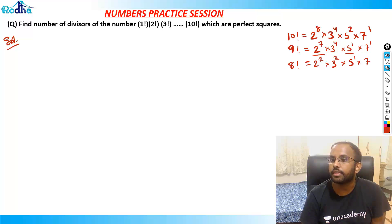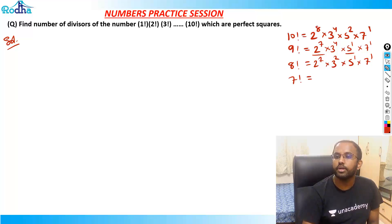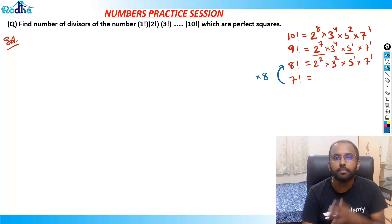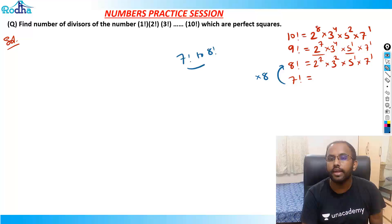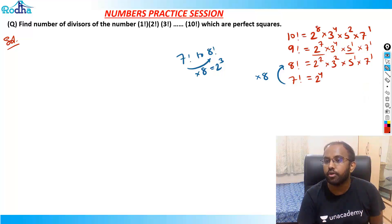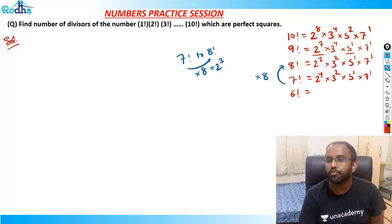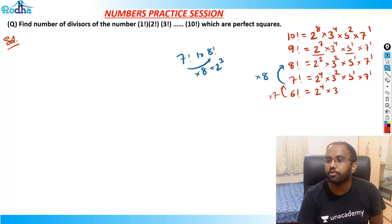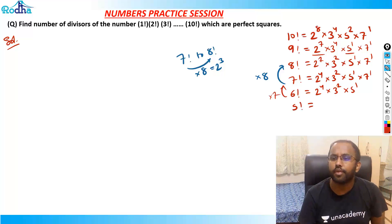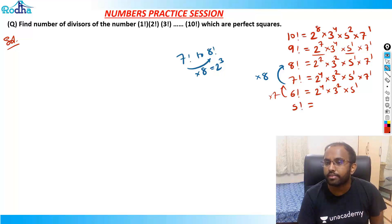From 6! to 7!, only 7 is multiplied, so removing 7 from 8! gives 6! = 2^4 × 3^2 × 5^1. Then 5! = 2^3 × 3 × 5. That's it. Going lower it becomes easier. 4! = 24 = 2^3 × 3^1. 3! = 2 × 3. 2! = 1 × 2.